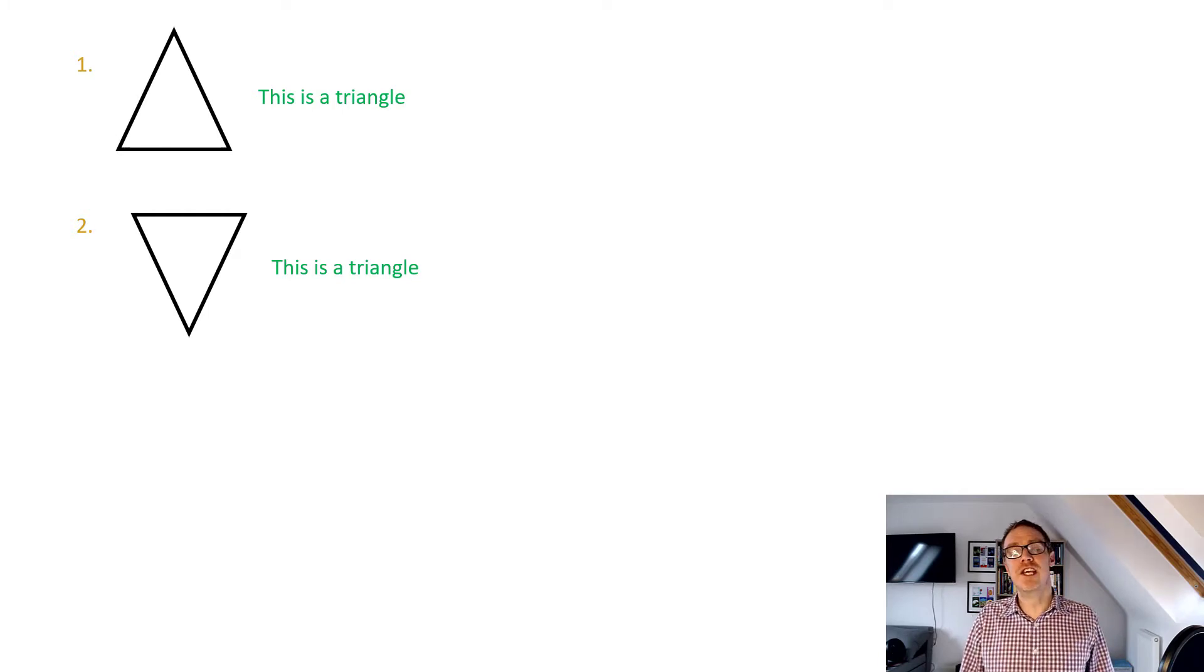And then what I'd state once students have attended to the critical feature that's changed, I would state that this is still a triangle. And then I'd pause again to get students to reflect on that. What have they learned there about what it takes to be a triangle? Well hopefully they've learned that the orientation doesn't matter. Whiz that around wherever you want, you've still got yourself a triangle.